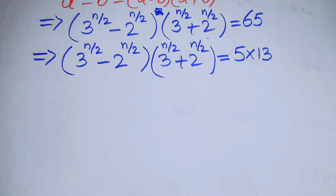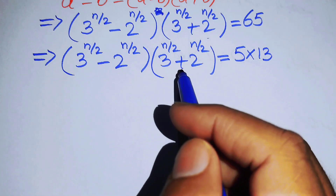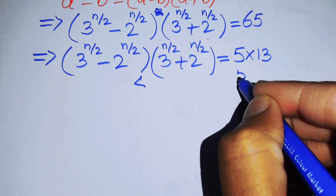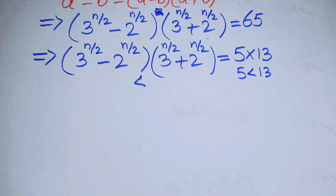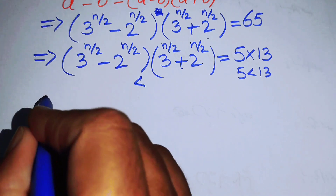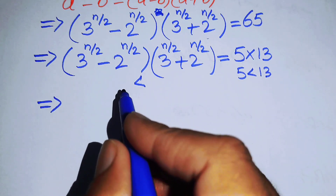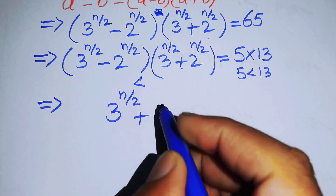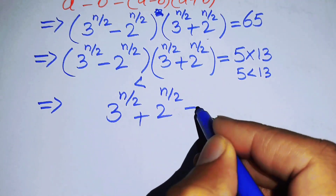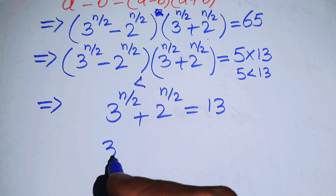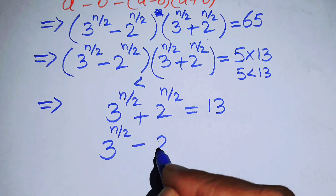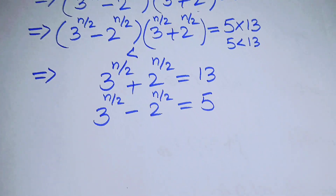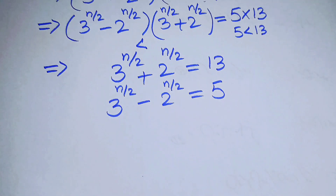We compare both sides. The first factor is less than the second factor; similarly, 5 is less than 13. So we equate the lesser and greater terms respectively, giving: 3^(n/2) plus 2^(n/2) equals 13, and 3^(n/2) minus 2^(n/2) equals 5.